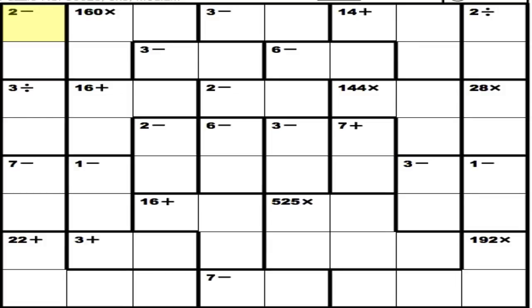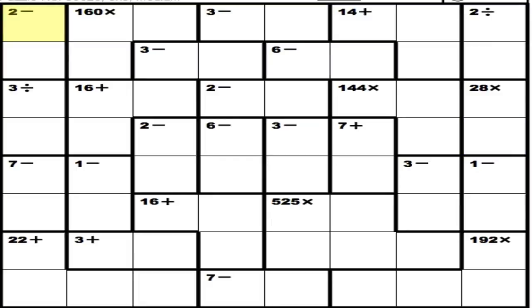I'm going to show you how I solve an 8x8 KenKen puzzle, and I will fill in a couple of notes in some of these boxes for things that I'm certain about, like in this subtraction problem here where the answer is 7. I know that that's a 1 and an 8. To get 28 in a multiplication problem with 2 squares can only be gotten by 4 times 7, so I'll fill those in and get right back to you.